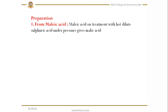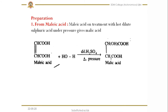We will see the preparation of malic acid. The first method is from maleic acid. When maleic acid is treated with dilute sulfuric acid — that is, in the presence of water — at higher temperature, addition of the hydroxy group takes place to the double bond. To one carbon there is addition of the hydroxy group, and to the other carbon there is addition of hydrogen. As a result we get malic acid.